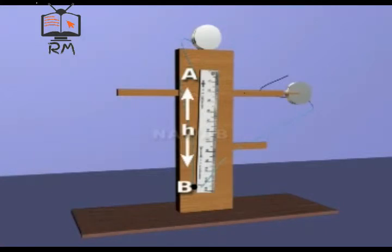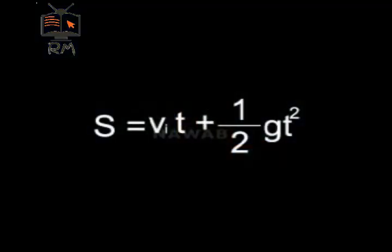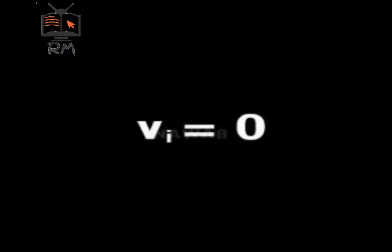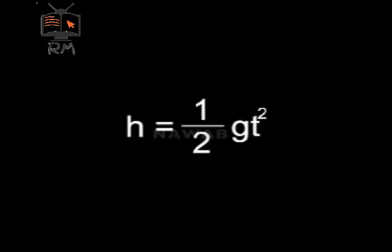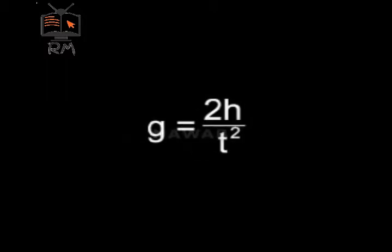If the bob covers this distance in time t, then according to the second equation of motion: s equals vi t plus 1 over 2 g t square. Since vi equals 0, so h equals 1 over 2 g t square, or g equals 2 h over t square.